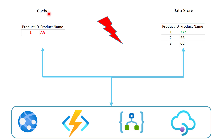The other challenge is how and when we are going to load the data into the cache — whether at application start or at a certain event, and more importantly, what data should be cached. We want to cache the data that's going to have the most performance impact on our system. These are the different challenges that the Cache-Aside Pattern is trying to solve.